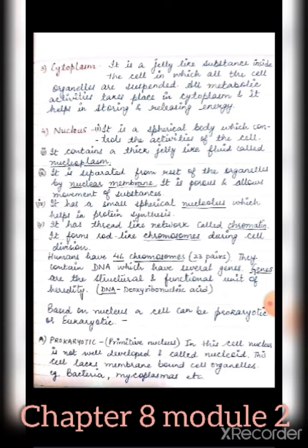Based on the nucleus, a cell can be prokaryotic or eukaryotic. Prokaryotic is primitive and eukaryotic is advanced. In a prokaryotic cell, the nucleus is not well developed and is called a nucleoid. This cell also lacks membrane-bound cell organelles — there is only a space where the genetic material is present, called the nucleoid.